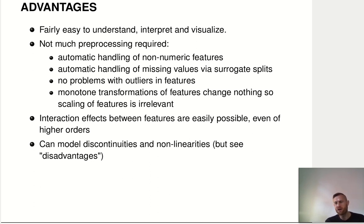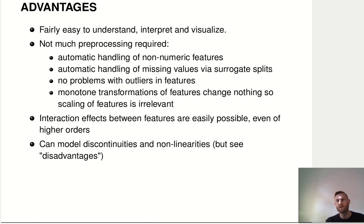Features that are not numeric are no problem — you can just treat them as is. You don't even have to worry about setting up dummy coding for categorical variables like you would have to do for linear regression. A huge win for classification and regression trees is that they can deal with missing values in the features. While trees are being built, they also build up a set of fallback rules — the so-called surrogate splits — with which to split the data if the data they really want to use is not available. This makes them really useful for applications.